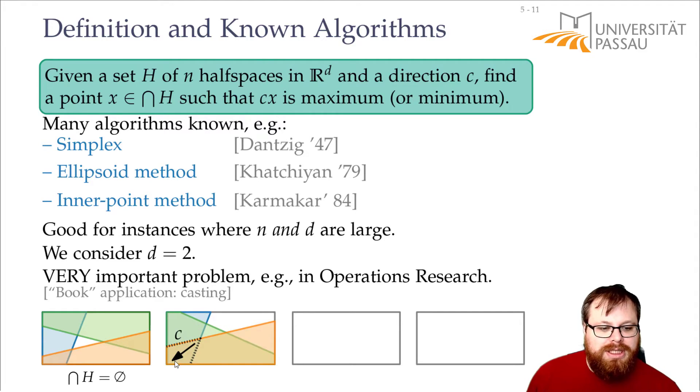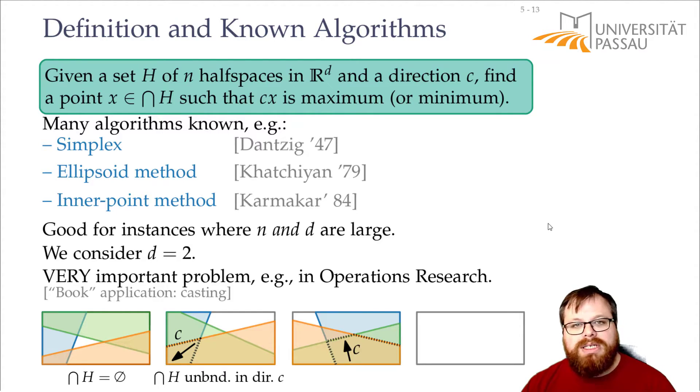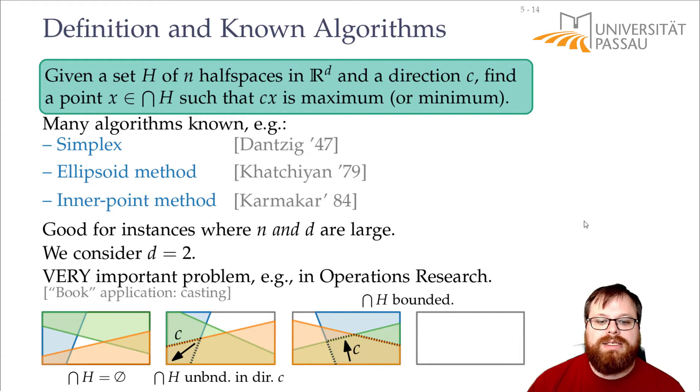What else can happen? We have the intersection here and it's unbounded in one direction. This is not a problem unless it's unbounded in direction of c. Then the solution is basically in infinity. If it's bounded in direction c, for example here this is the intersection of all the half planes, then there is a finite solution.